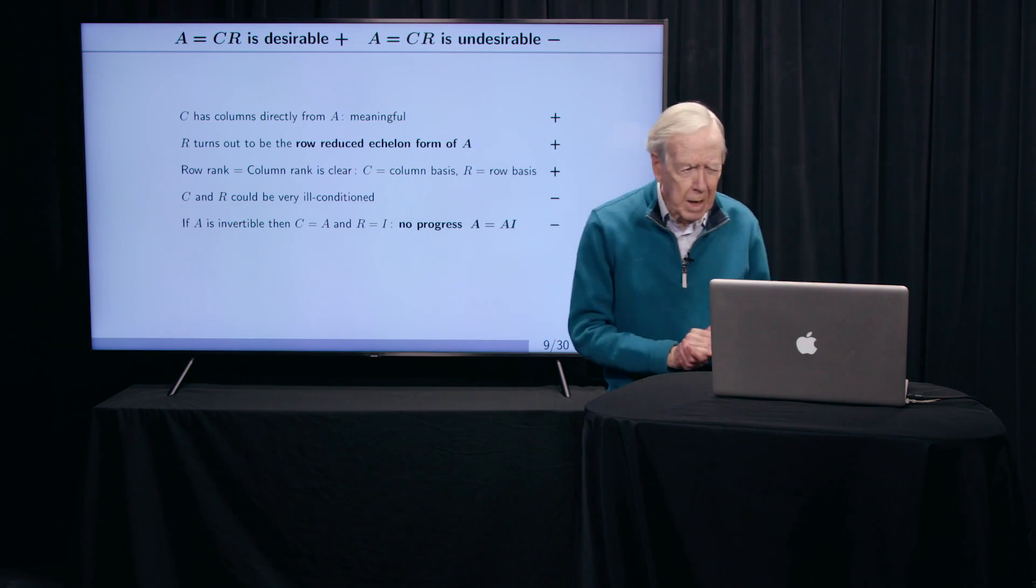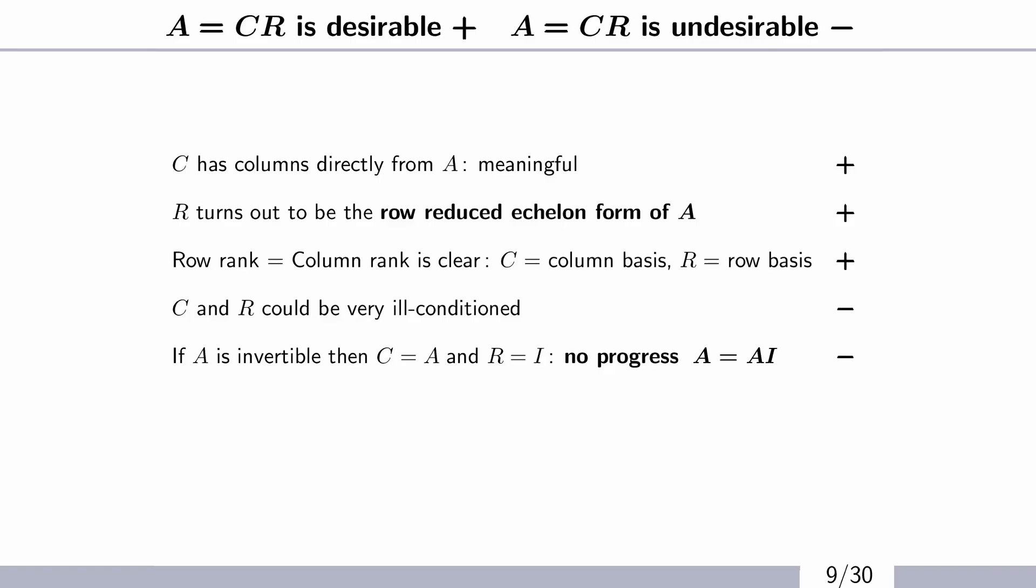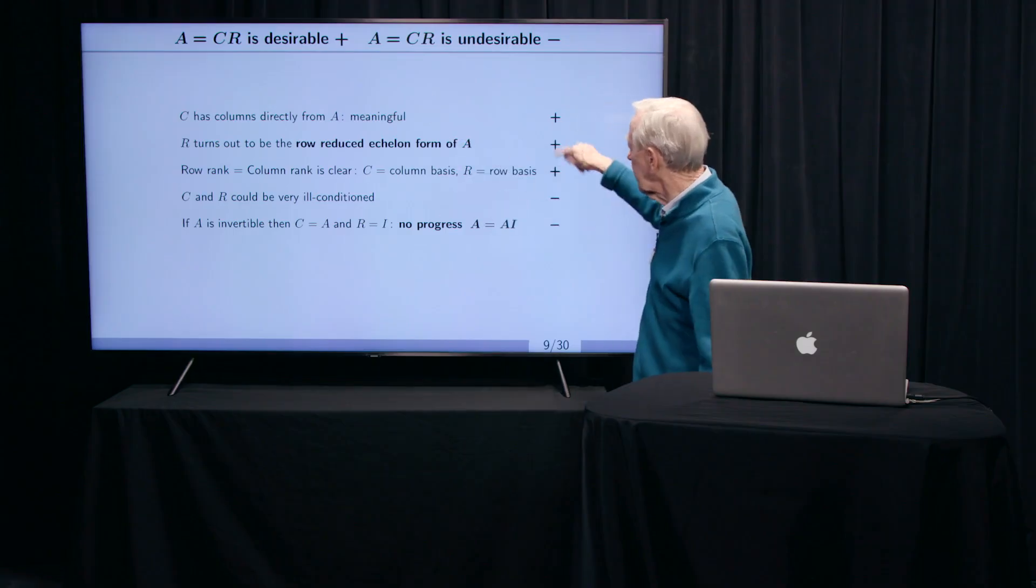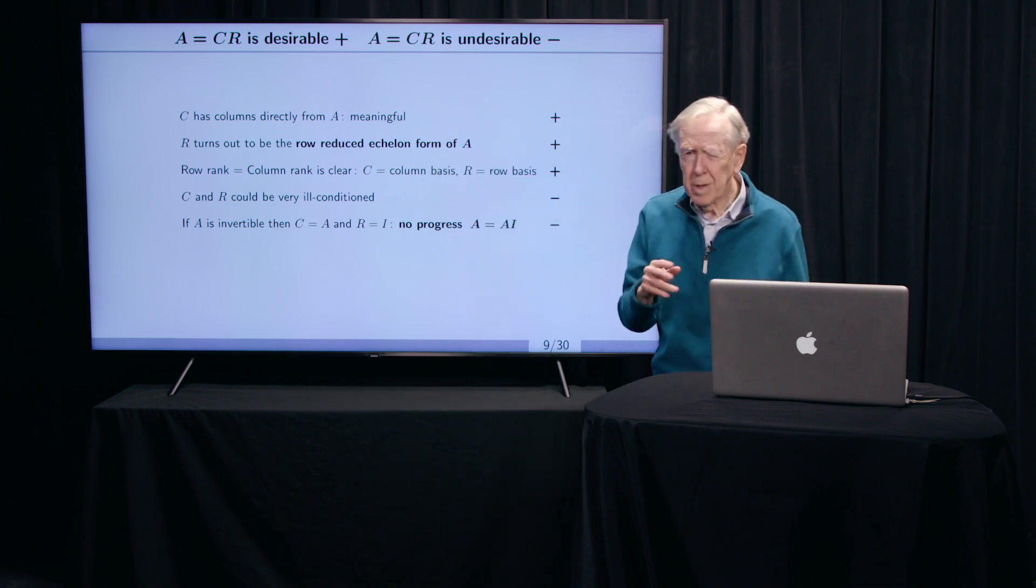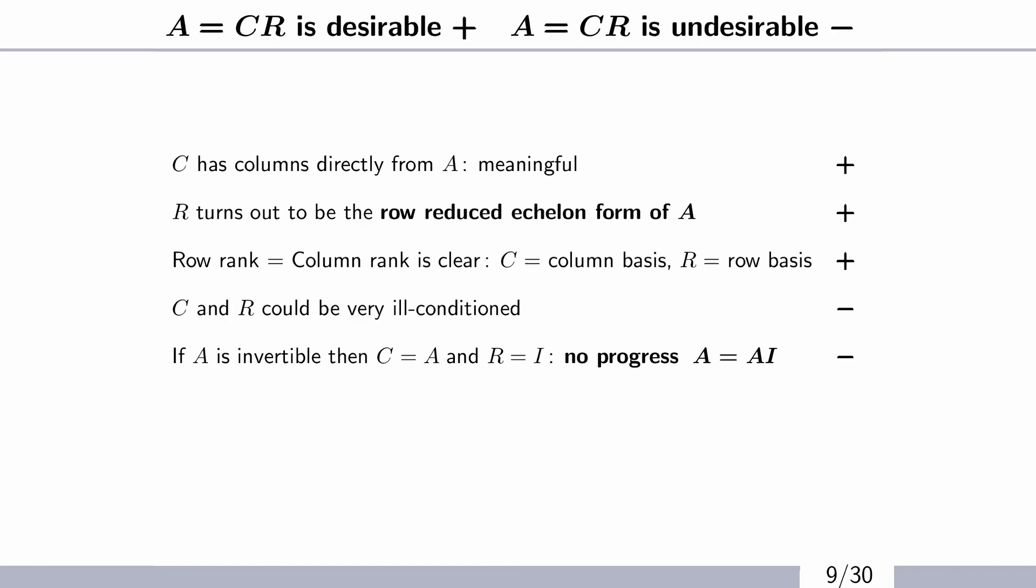And finally, a last thought about these. So this is C times R. I'm urging teachers to present that part early. So what are the good things I've marked with a plus? First of all, the columns, we're looking at them in C. And we see them from A. We take them directly from A. R turns out to be a famous matrix, row reduced echelon form, it's called. So to see that pop up here is terrific. And then this wonderful fact that row rank equal column rank is clear from this C times R. So those are all terrifically good things.